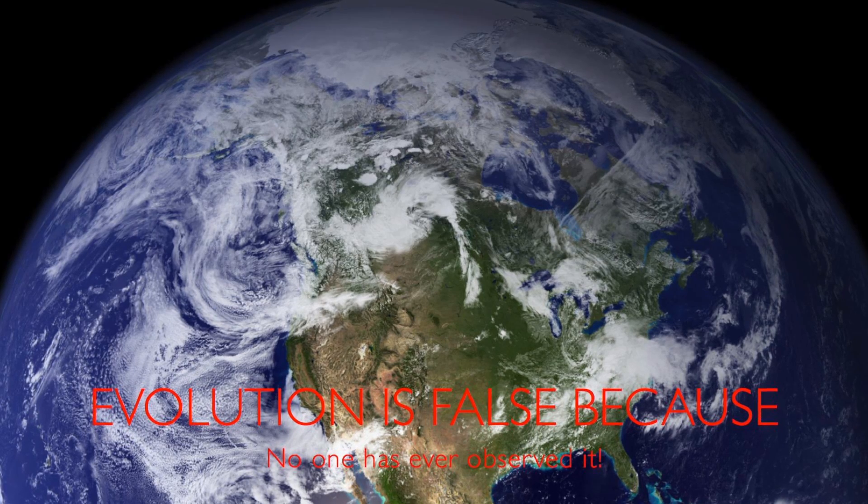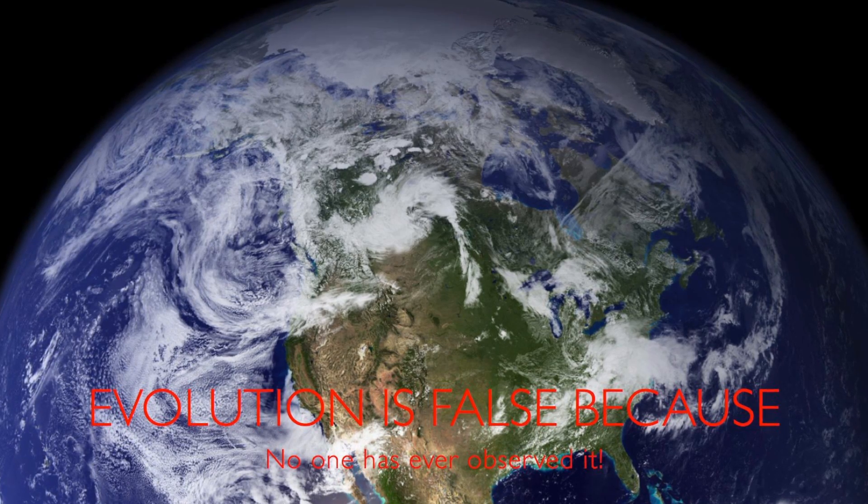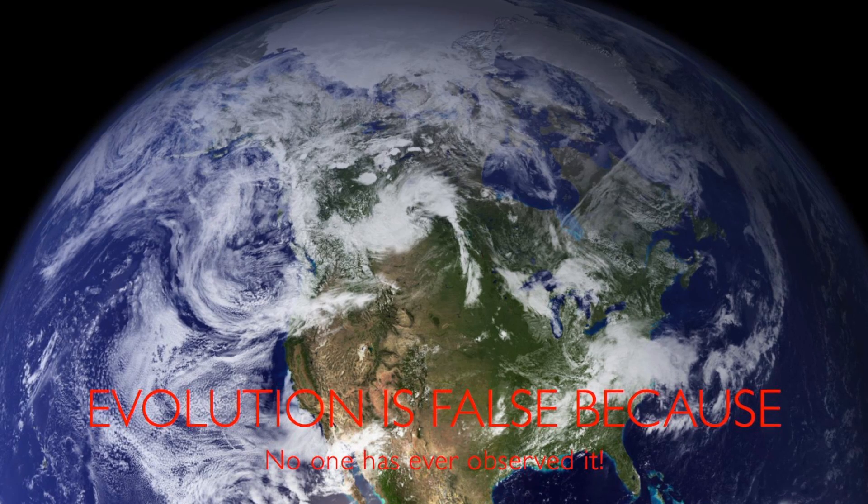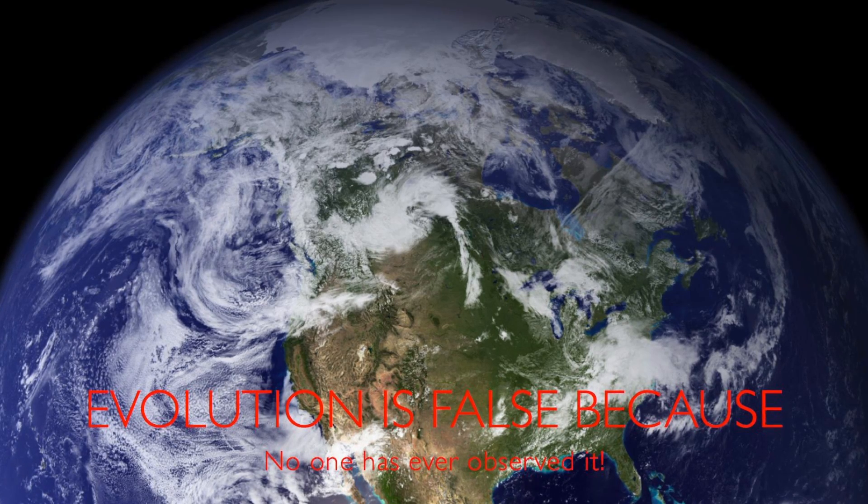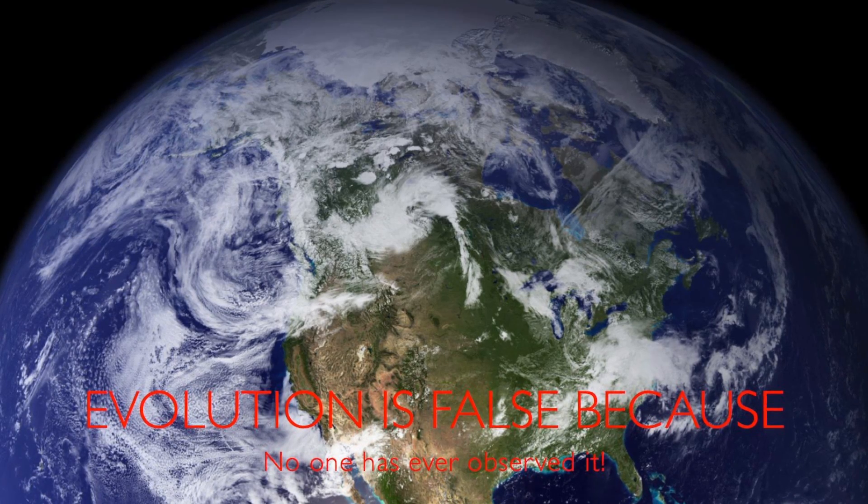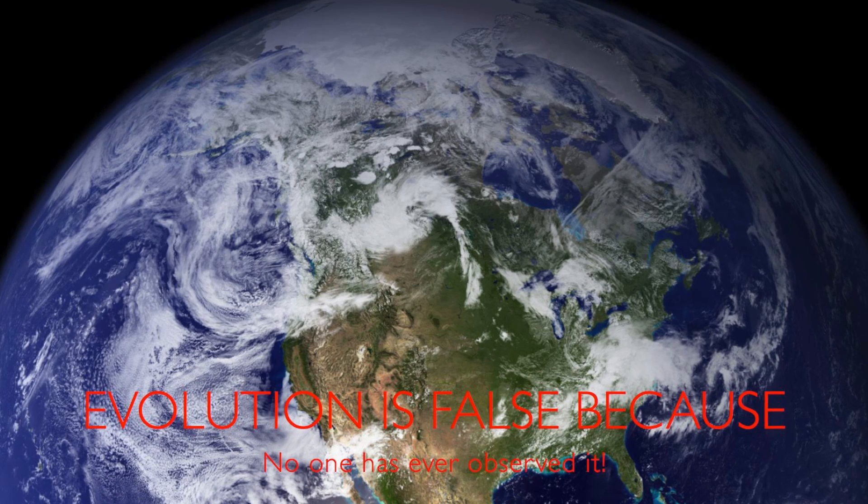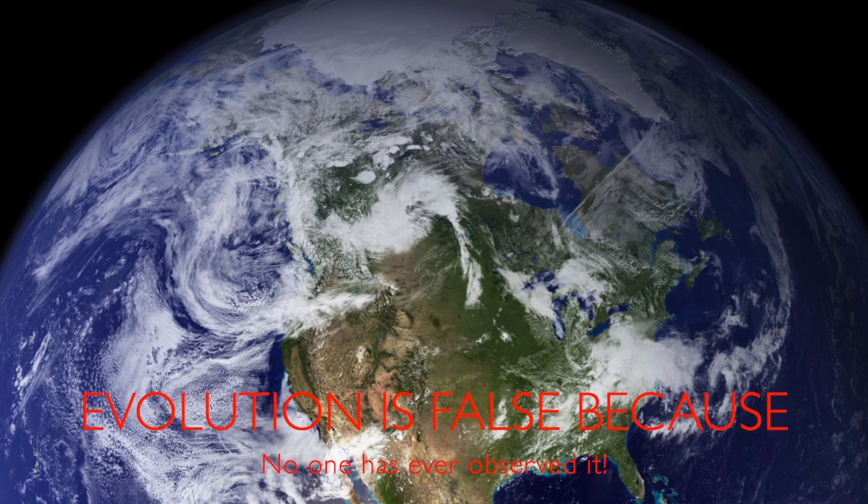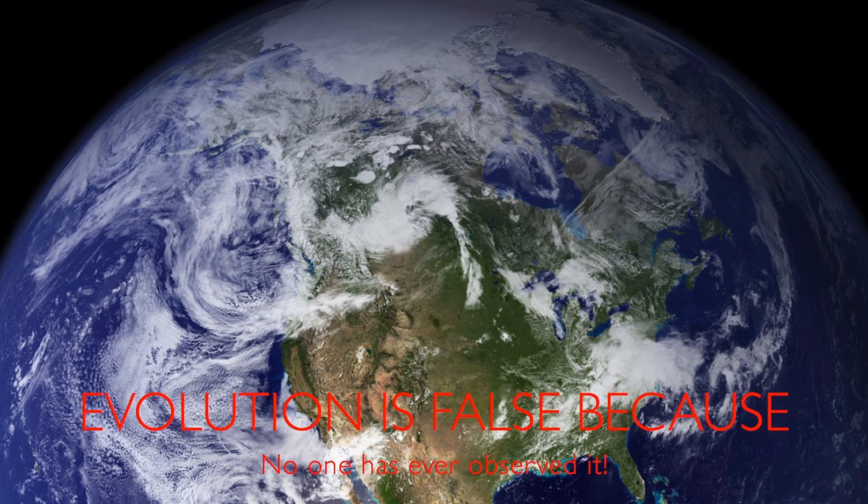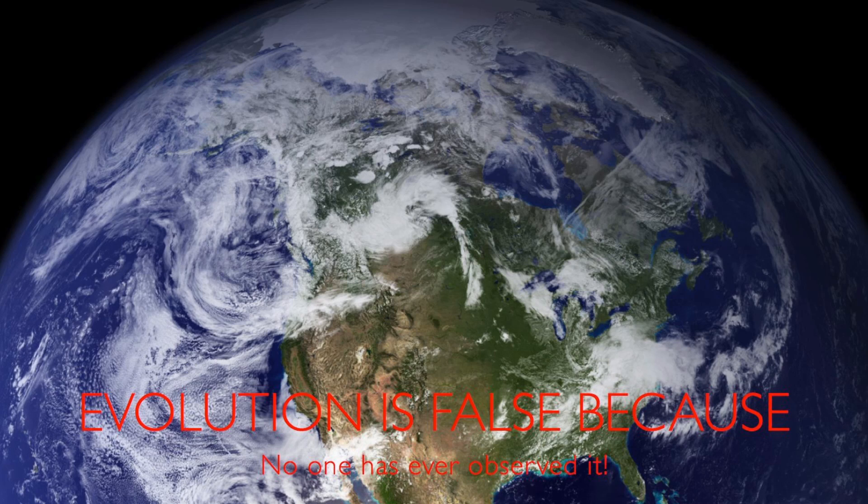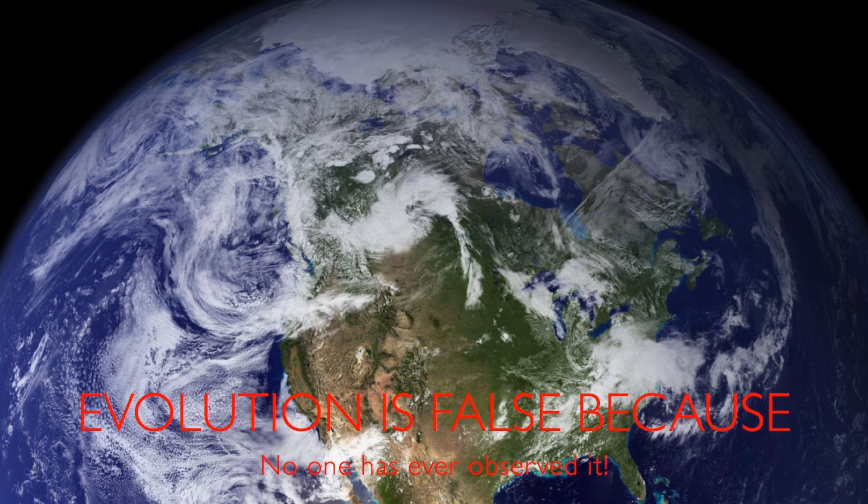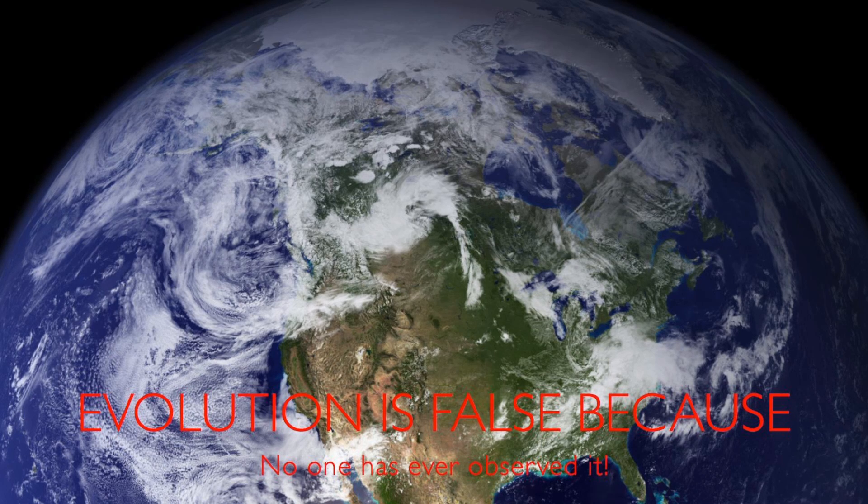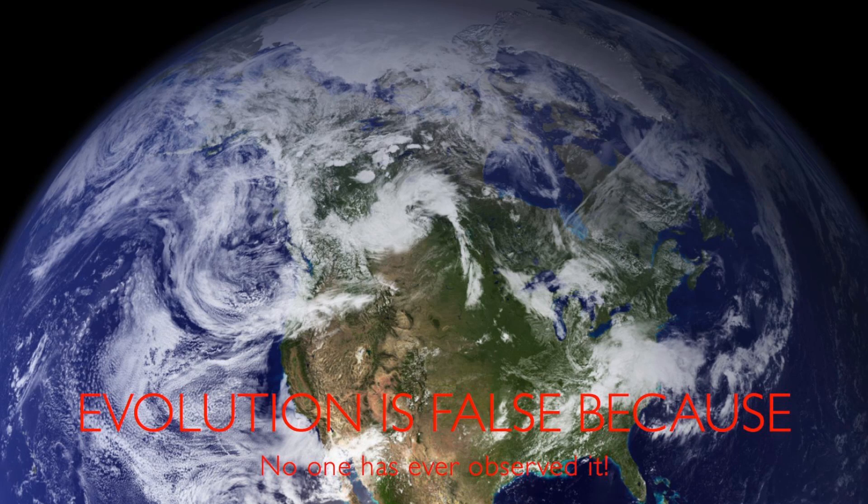Macroevolutionary study focuses on changes that occur above the species level, in contrast with microevolution, which refers to smaller evolutionary changes within the species population. The difference between them is the time scale; the processes are fundamentally the same. This is why we can directly observe microevolution but require data from other sources, like the fossil record, to observe macroevolution.